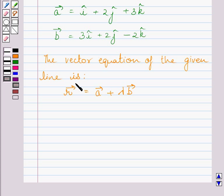Here r vector is the position vector of an arbitrary point p on the line. Substituting the components for vector a and vector b in this equation, we get r vector equals i plus 2j plus 3k plus lambda multiplied by 3i plus 2j minus 2k.